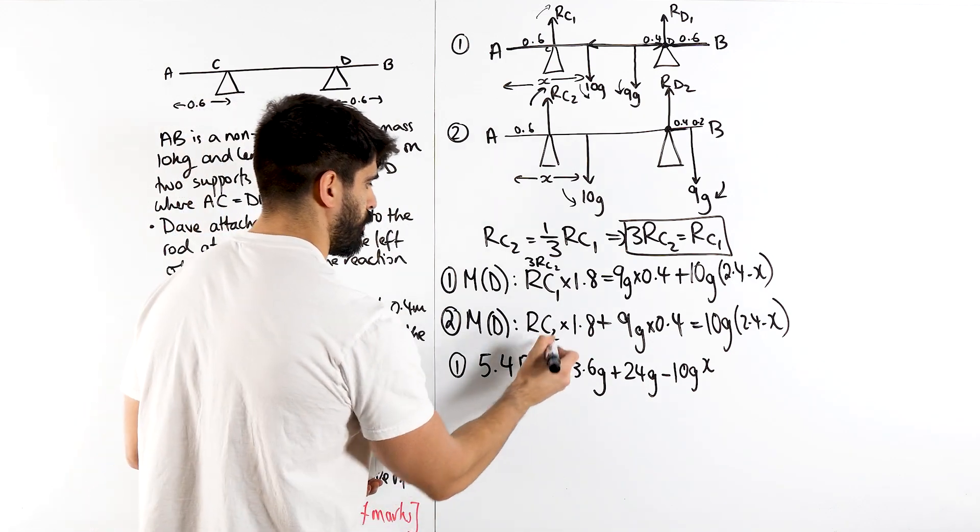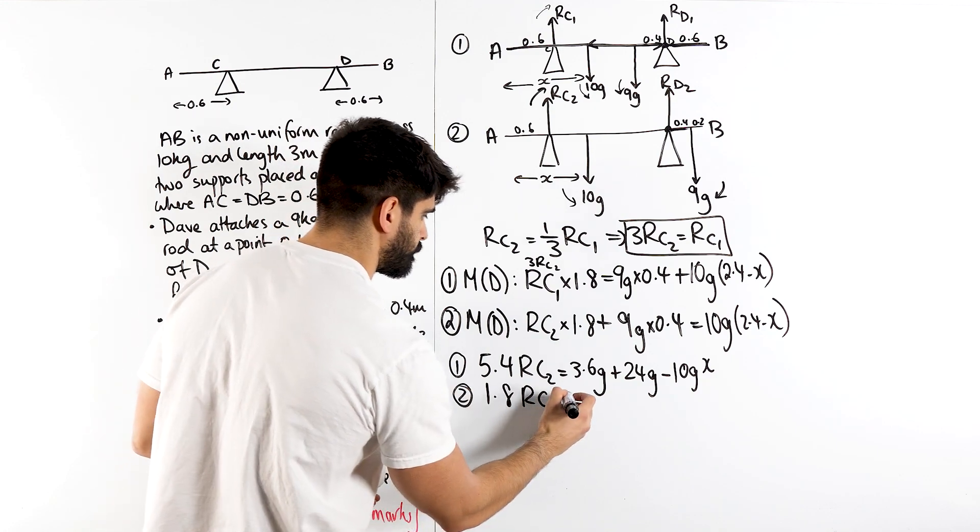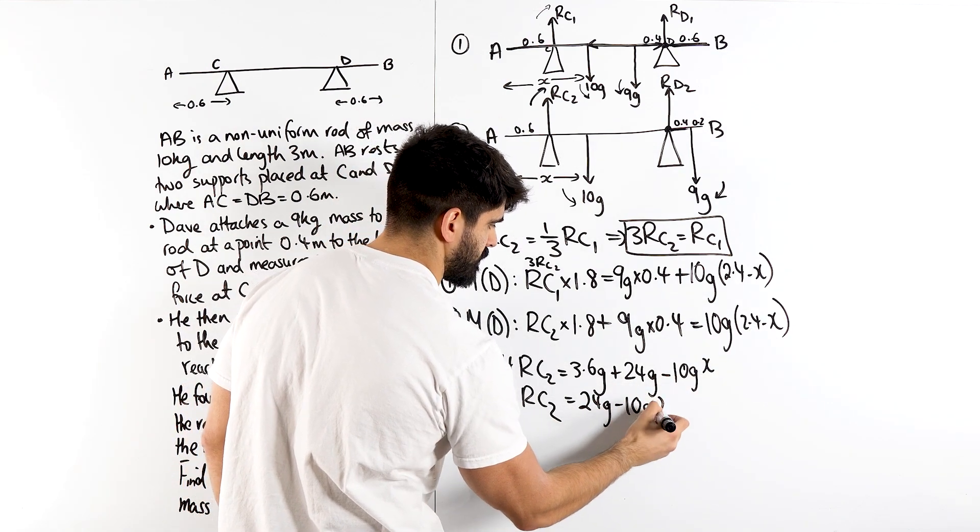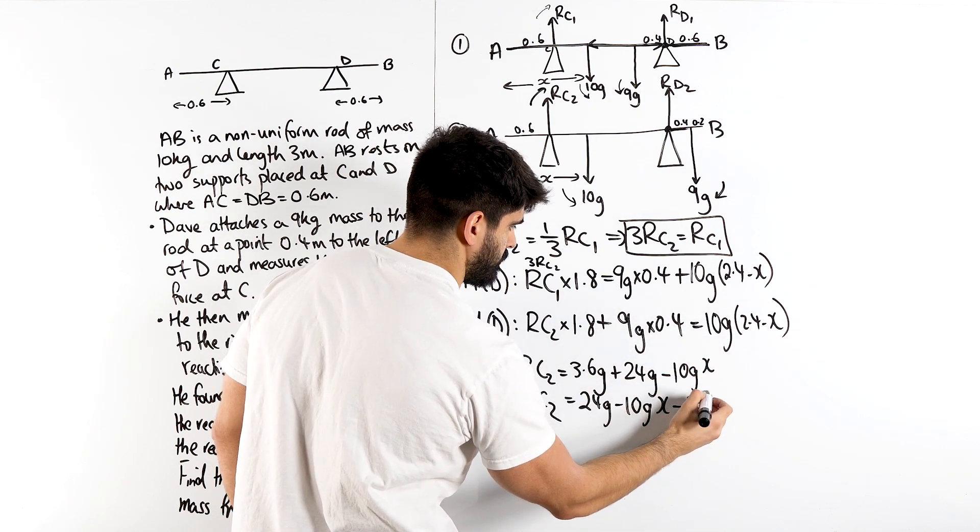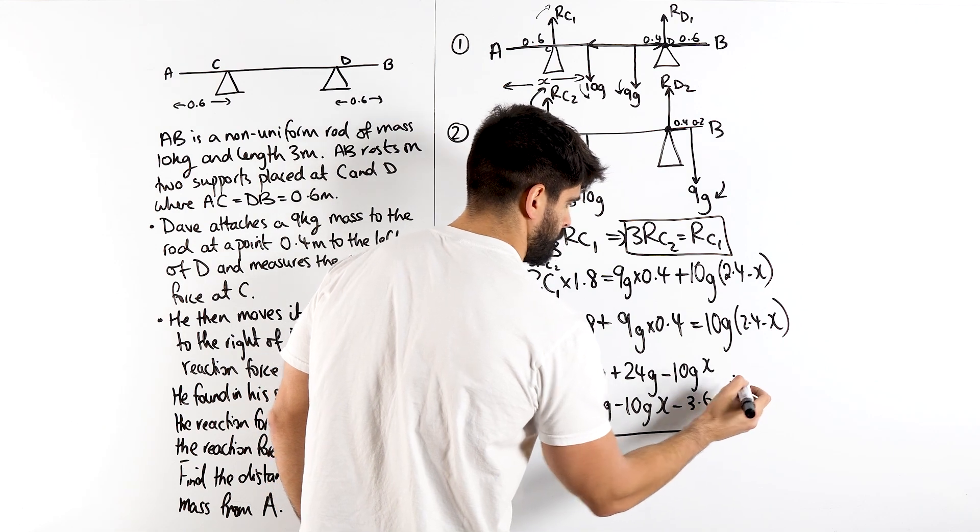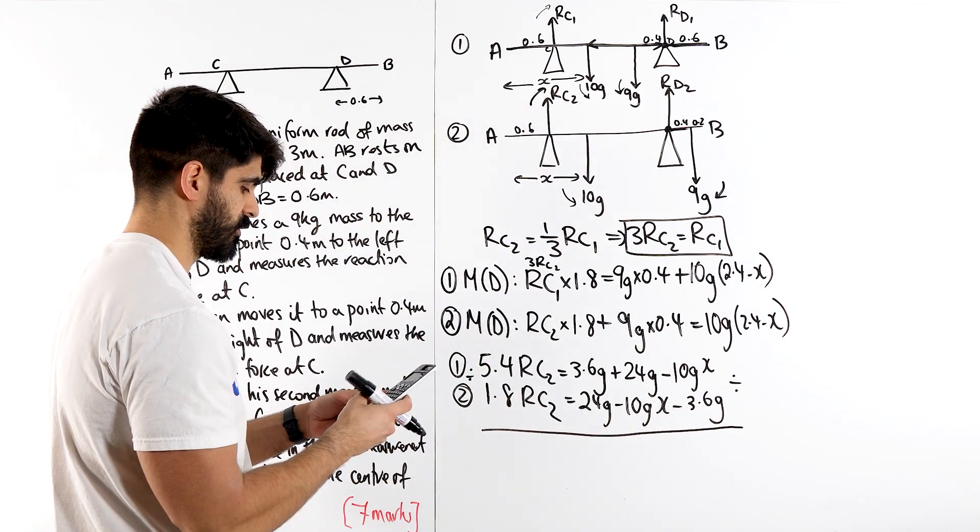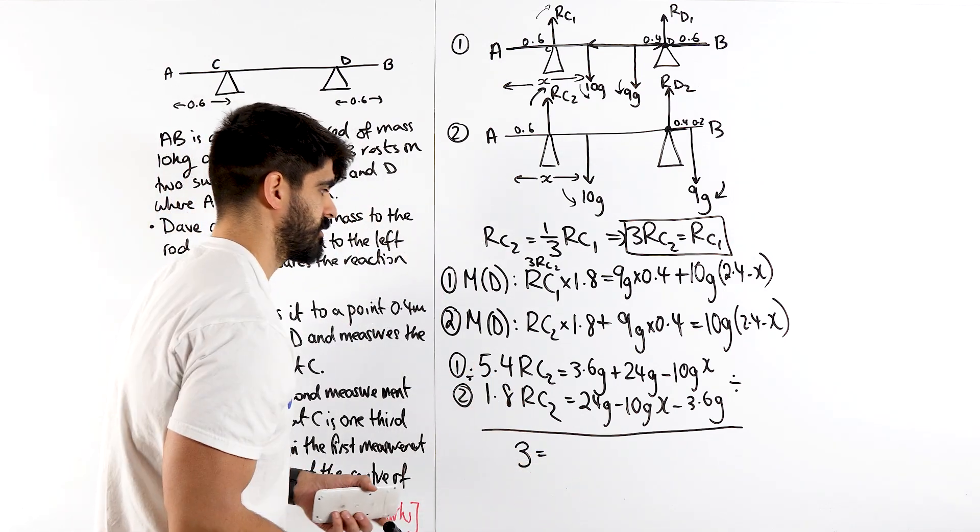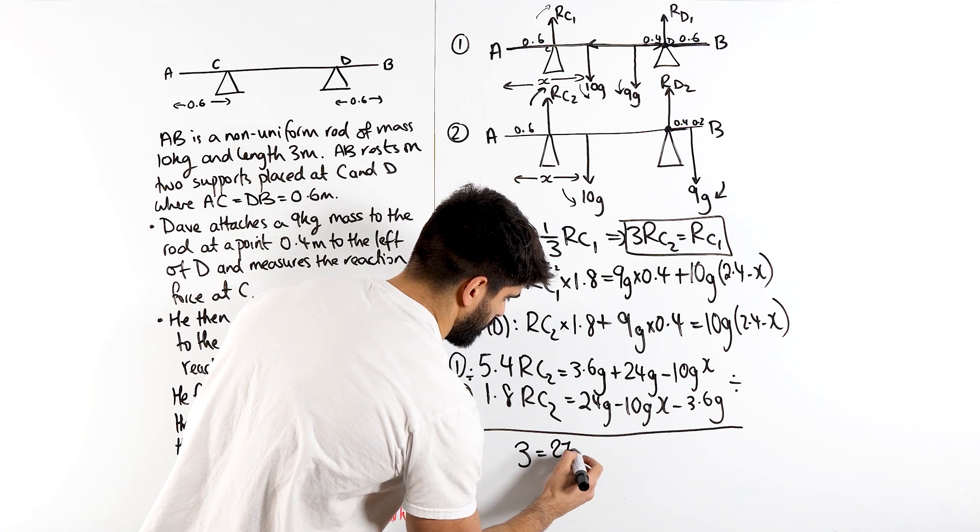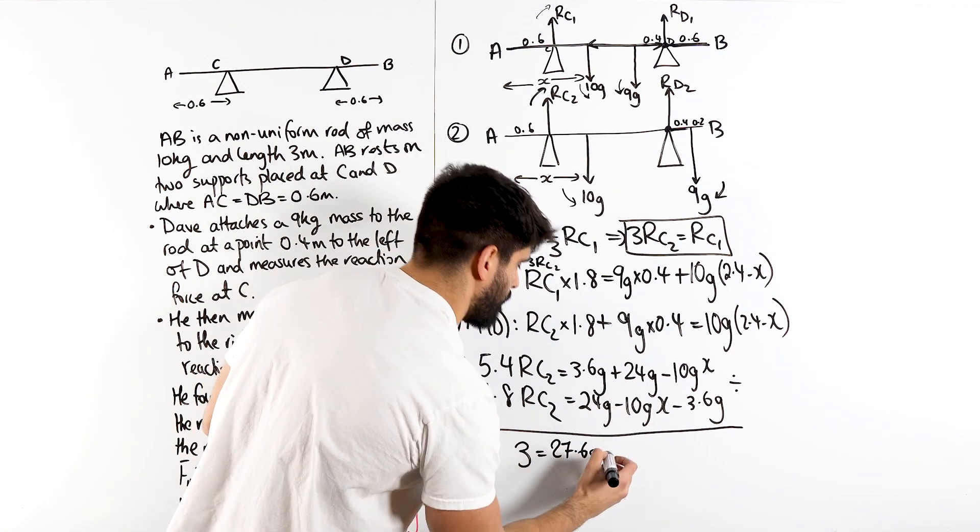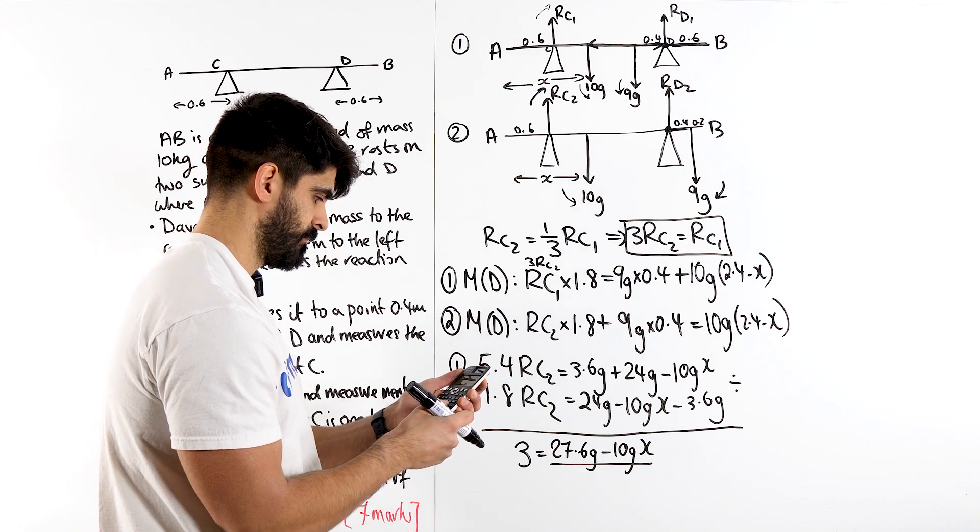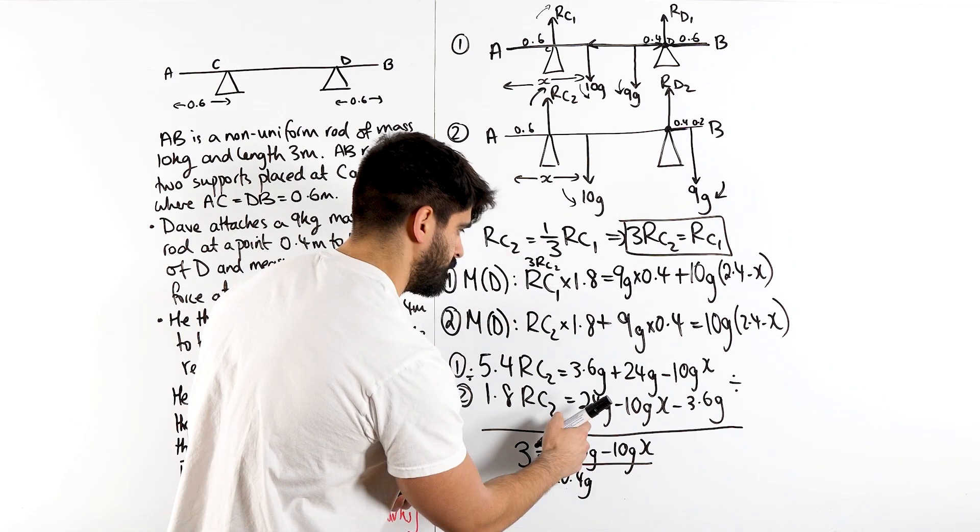Then down here I have 1.8RC2. Now this I'm going to move on to the other side. So I'm going to write this down again, which is 24G minus 10GX minus the 3.6G. Now from here, to get rid of the RC2 we're going to divide the two equations. Which gives me 3. So 5.4 divided by 1.8 is 3. So we just have to have 3 equals 3.6 plus 24, so we're going to get 27.6G minus 10GX all divided by 24 minus 3.6, which is 20.4G minus 10GX. Now something very nice happens here, the G's will cancel. Let me times through.